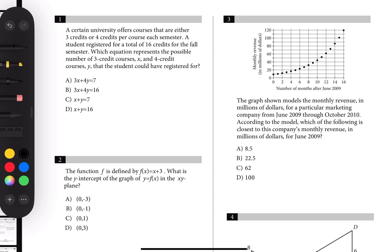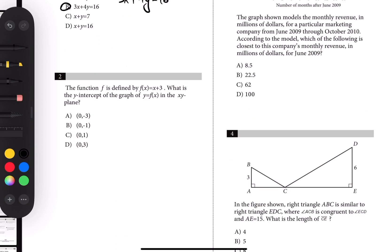Let's try to solve this. Three credits or four credits per course — the number of three credit courses is x, so 3x, and the total is 16. We add them: four credit courses y, so 4y is equal to 16.